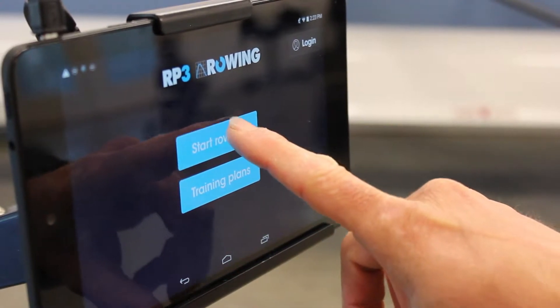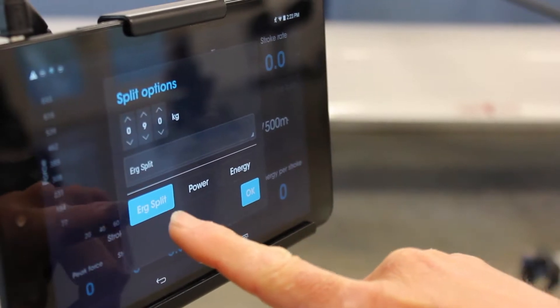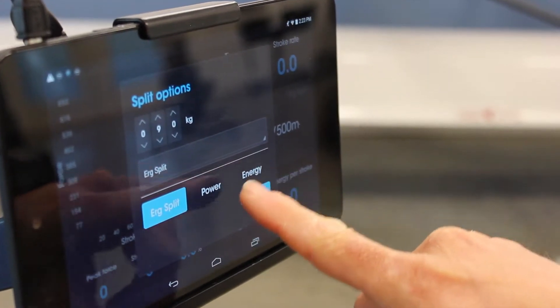When we get into the app and we're going to start rowing, we come to the cell here. It gives us three choices: split, power or energy.